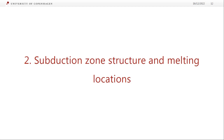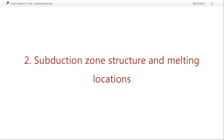Moving on to subduction zones. We'll cover the overall structure, the types of magmas, and then go into more depth in the next part of the lecture. Subduction zones were covered briefly in the first lecture — they're located around the margins of some oceanic plates, also called volcanic arcs. Arc magmatism is the main type at subduction zones; they're called arcs because on a map they form curved lines, not straight lines like mid-ocean ridges.